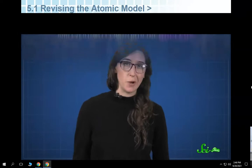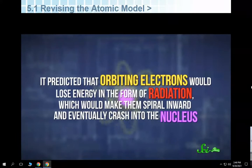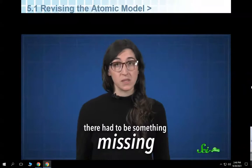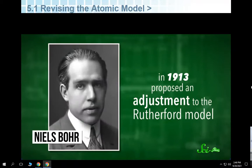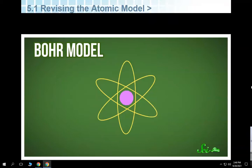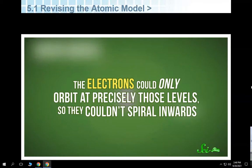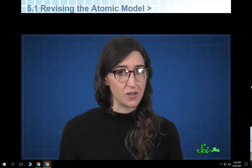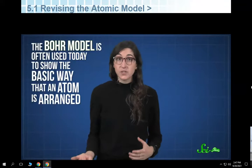There was one major problem with the planetary model: it predicted that orbiting electrons would lose energy as radiation, causing them to spiral inward and eventually crash into the nucleus, implying all atoms would collapse. But stable atoms do exist, so something was missing. In 1913, Danish scientist Niels Bohr proposed an adjustment: electrons orbit at very specific energy levels. They could only orbit at precisely those levels, so they couldn't spiral inward. An electron could switch levels by absorbing or releasing energy, but only discrete levels were allowed.